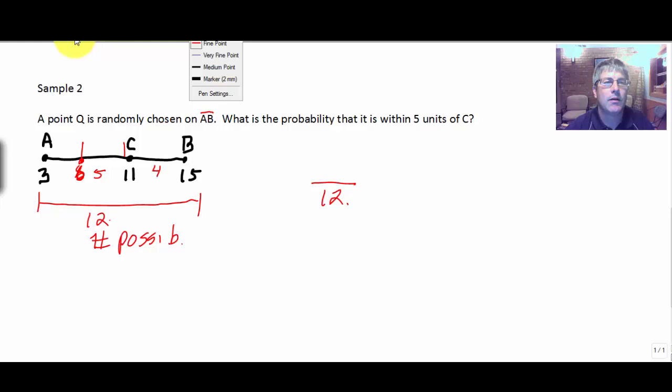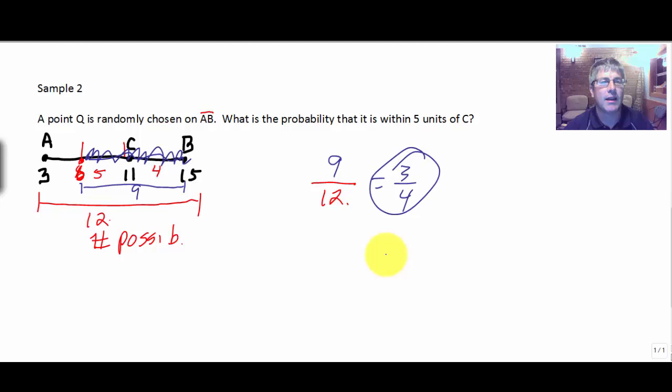The five plus the four, those are my winners. This is my winning region, because that's all within five units of C. So anywhere in that nine units is a winner. So nine out of 12 reduces to three out of four, and there's my final answer. The probability that point Q lies within five units of C is three out of four. So there's a basic introduction to probability, and I will see you in class.